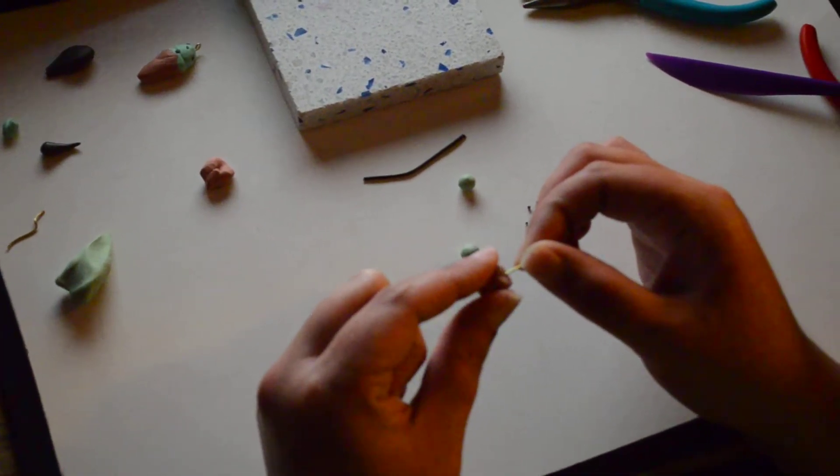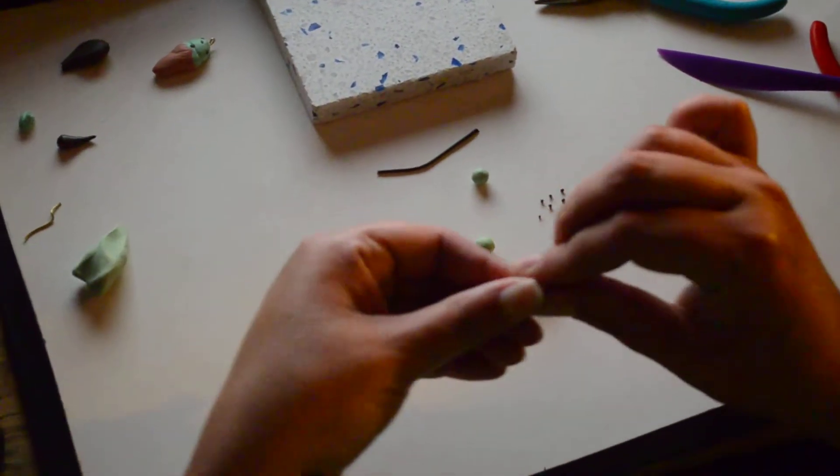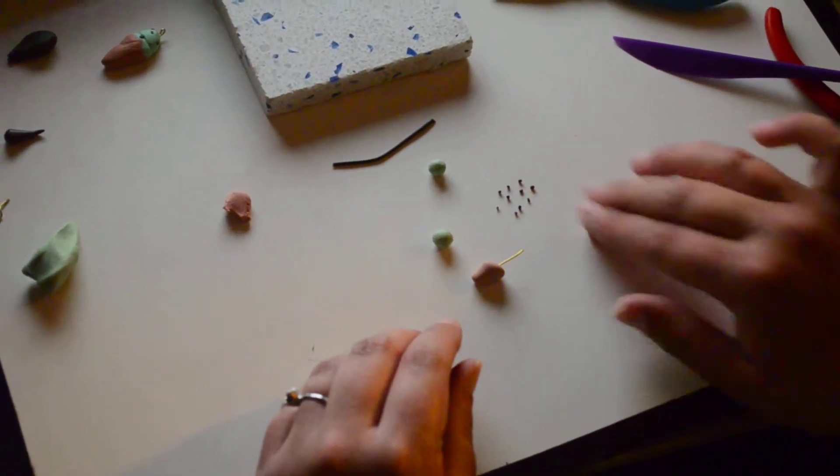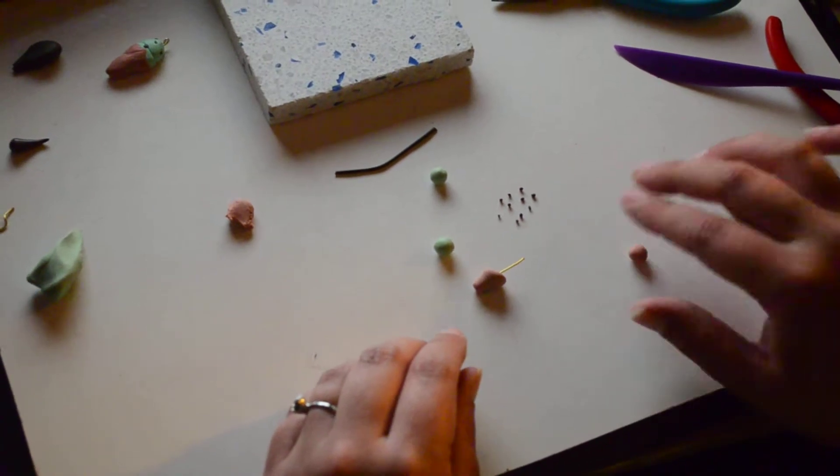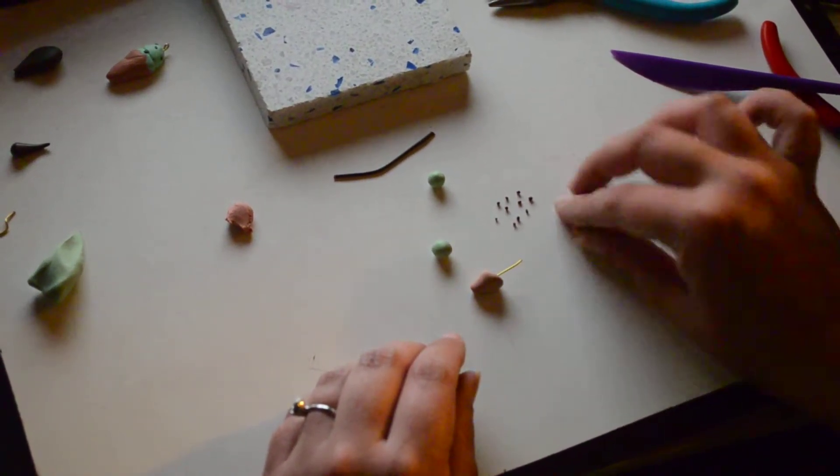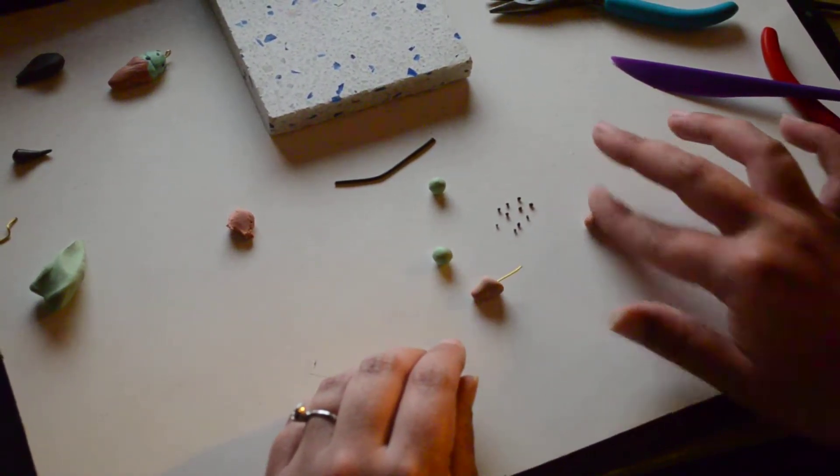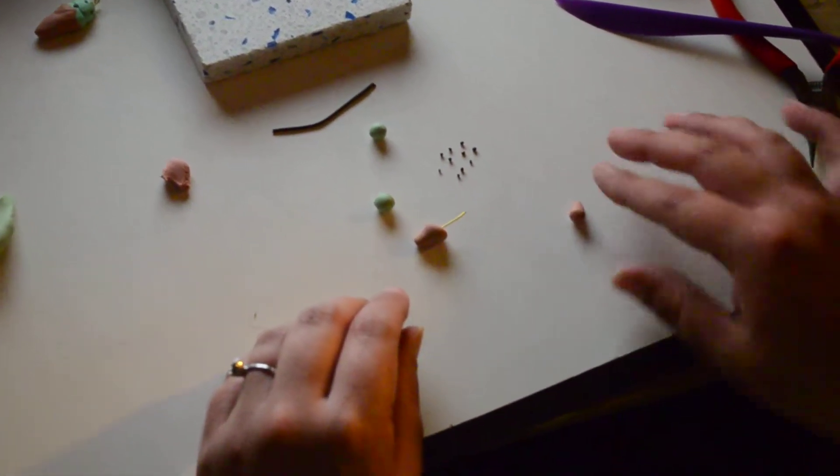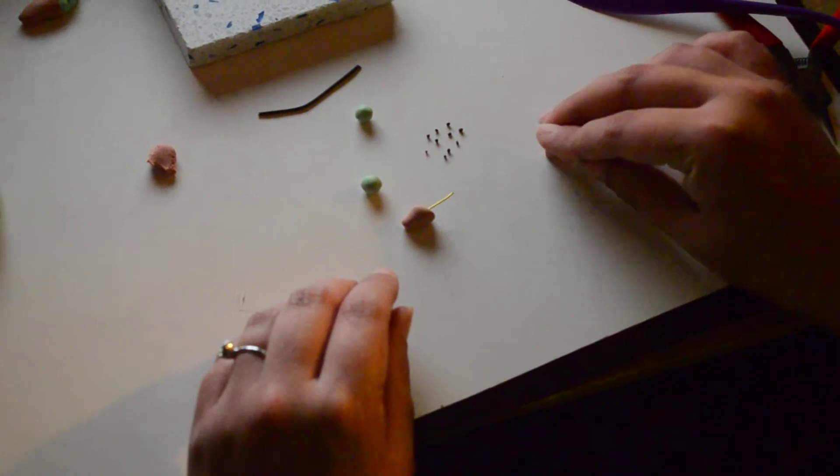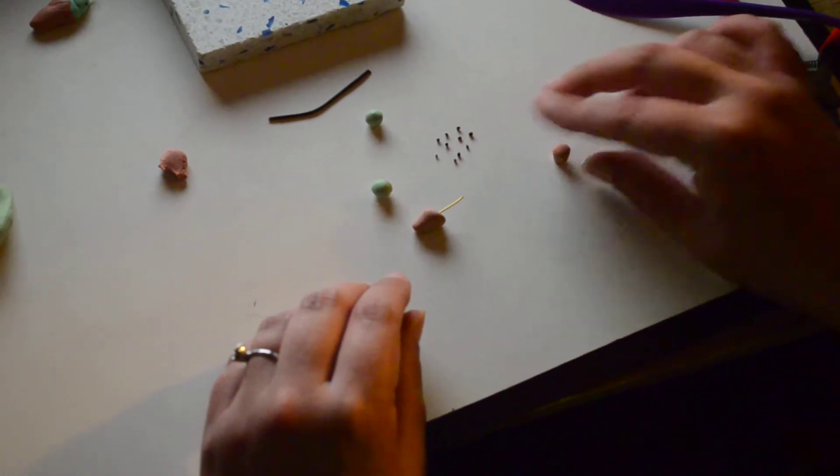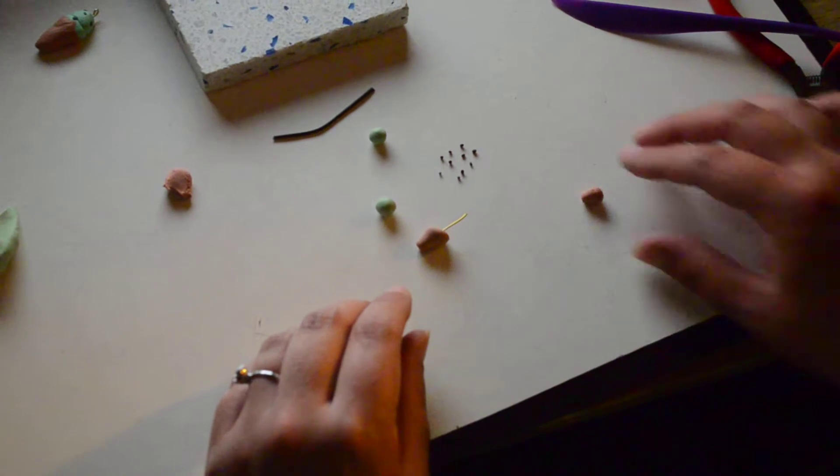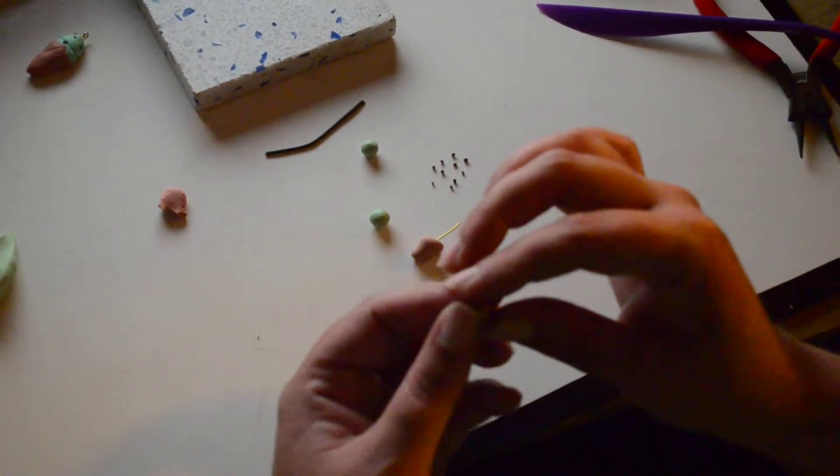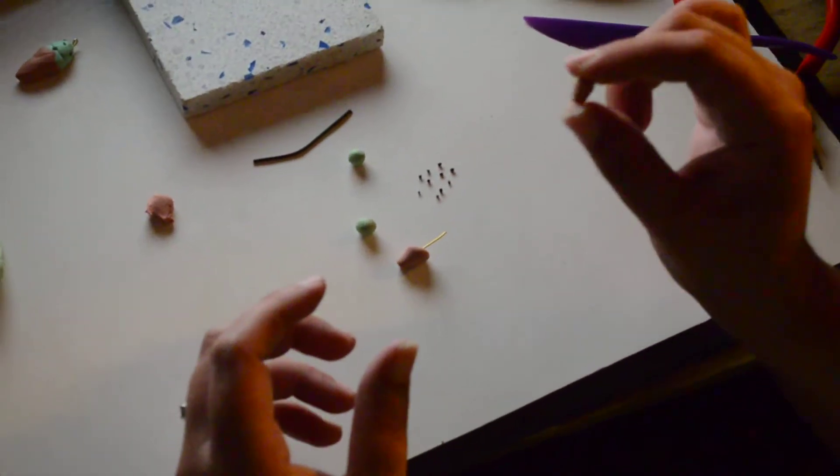I roll these out, you know, I start with a ball, and then I start making it smaller on one side, tamp it down until I have a cone shape.